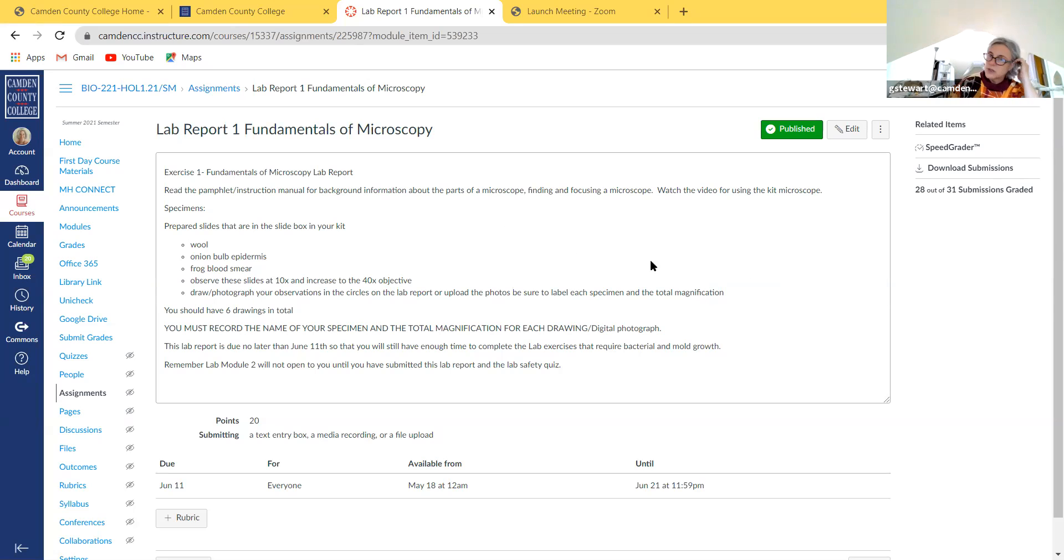You'll notice that in the comments on the lab report grade it'll say total magnification incorrect, please correct and resubmit. So this assignment has multiple submissions, multiple attempts, and it is still open so you can certainly fix that and then resubmit. I will go back in and regrade them and add those points. The assignment is available until the 21st. After the 21st I will not add those points, so you basically have a week to get that done.